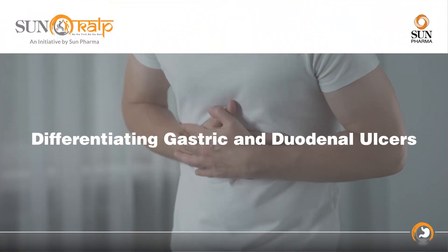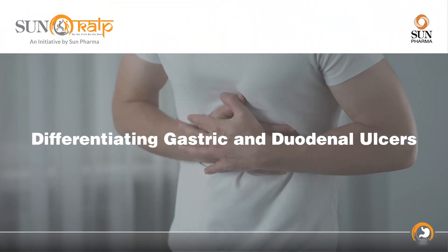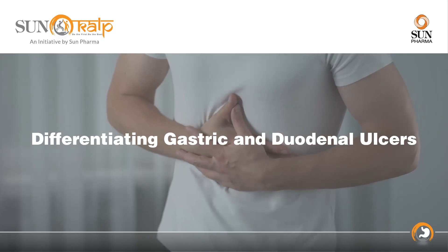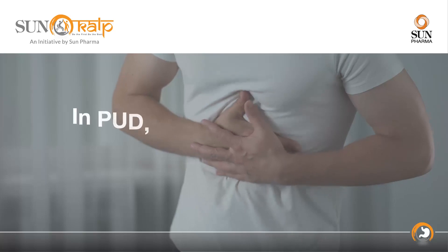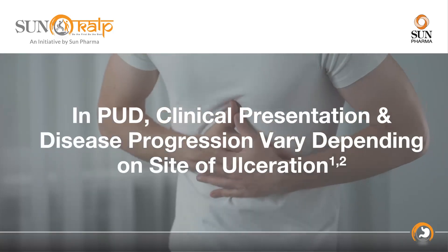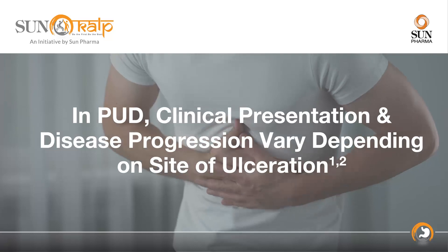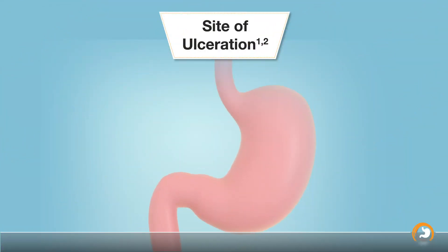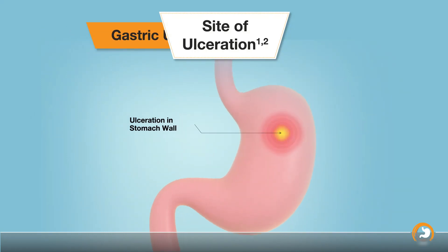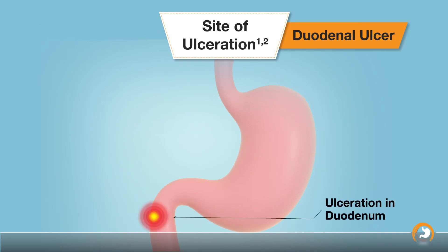Differentiating gastric and duodenal ulcers: Peptic ulcer disease is a common chronic gastrointestinal condition. The clinical presentation and disease progression vary depending on the site of ulceration. In peptic ulcer disease, ulceration may occur in the stomach wall, otherwise known as a gastric ulcer, or it may occur in the duodenum, also known as a duodenal ulcer.